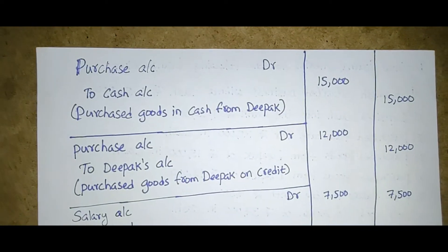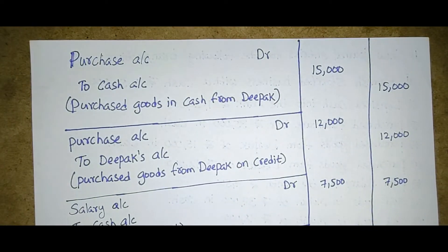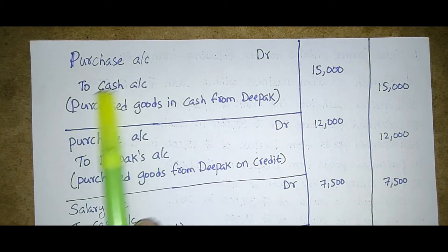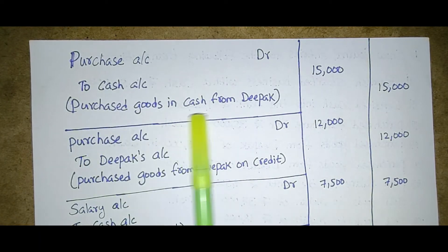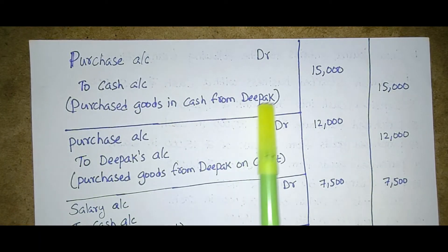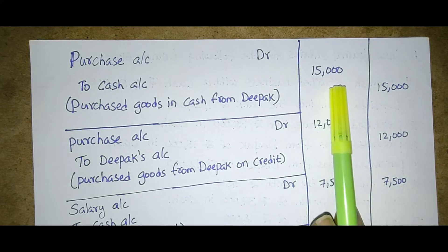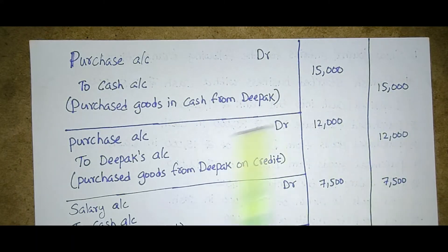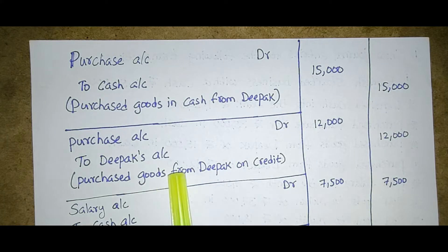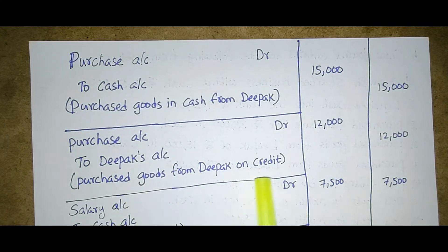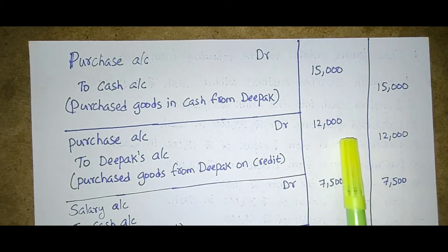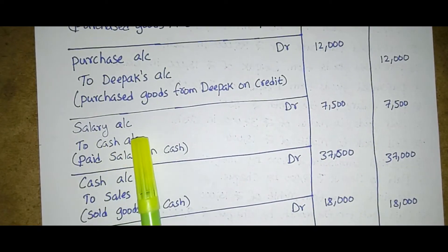Purchase account Dr. to cash account — purchased goods in cash from Deepak; fifteen thousand debit and fifteen thousand credit. Next: purchase account Dr. to Deepak's account — purchased goods from Deepak on credit; twelve thousand debit and twelve thousand credit.